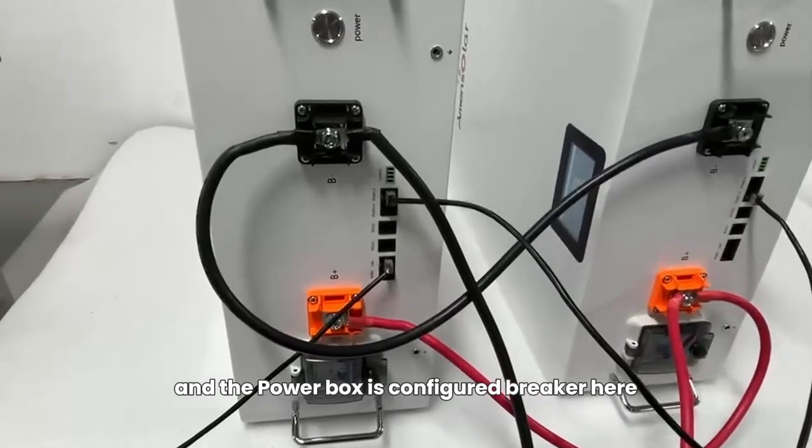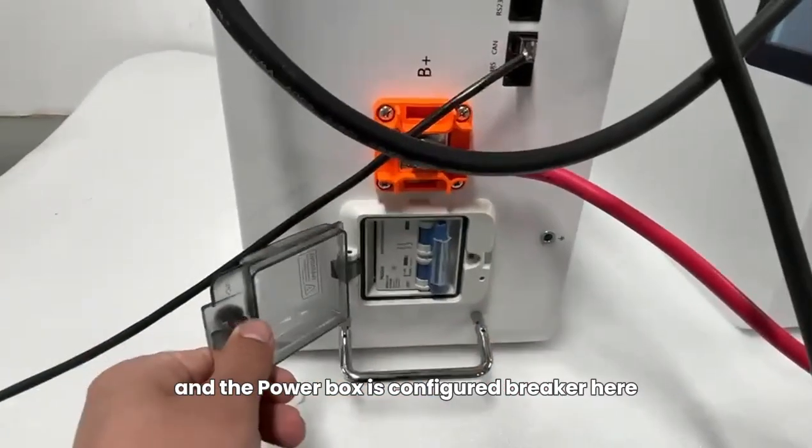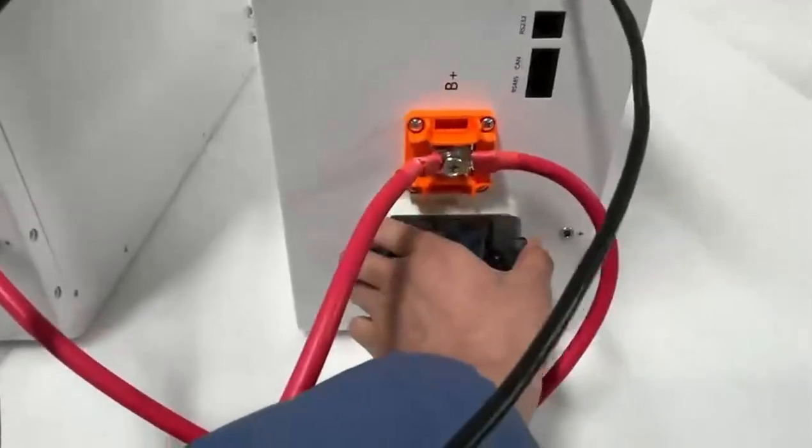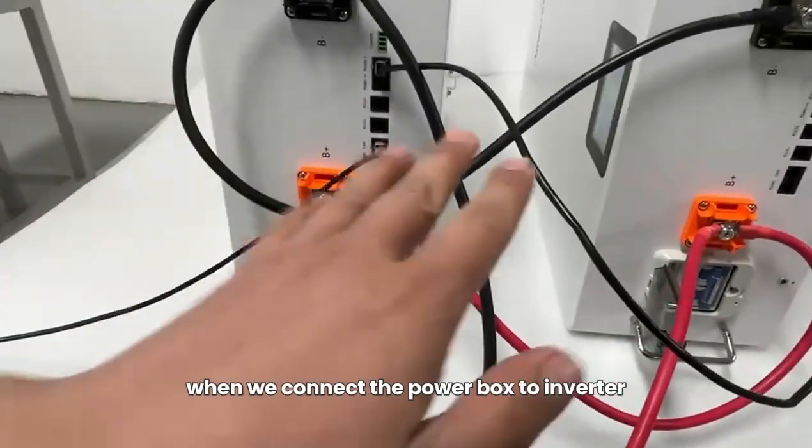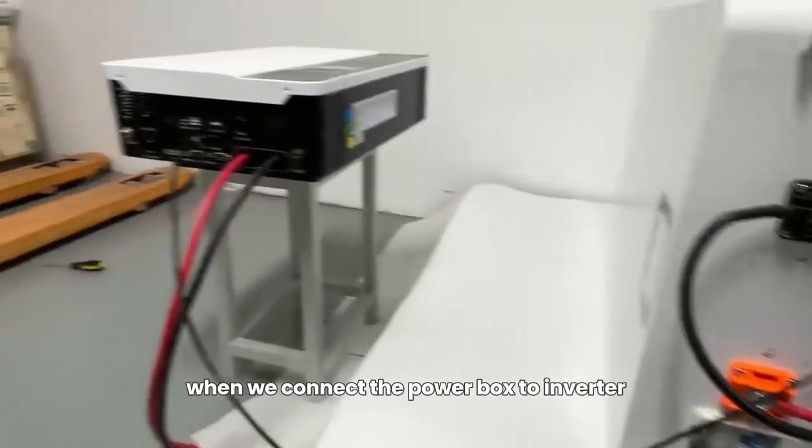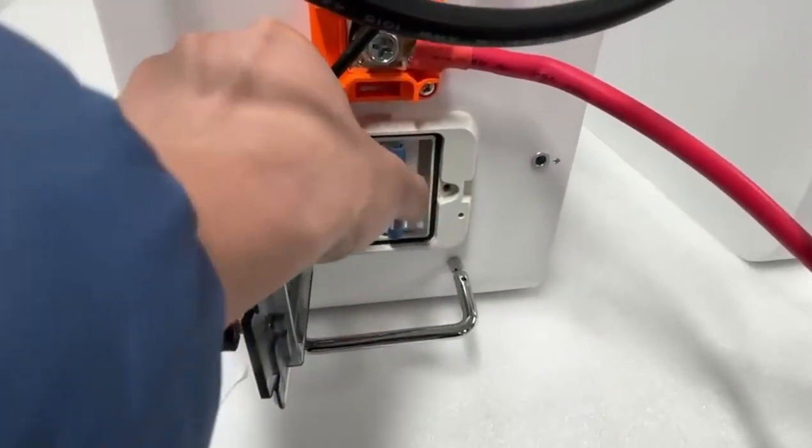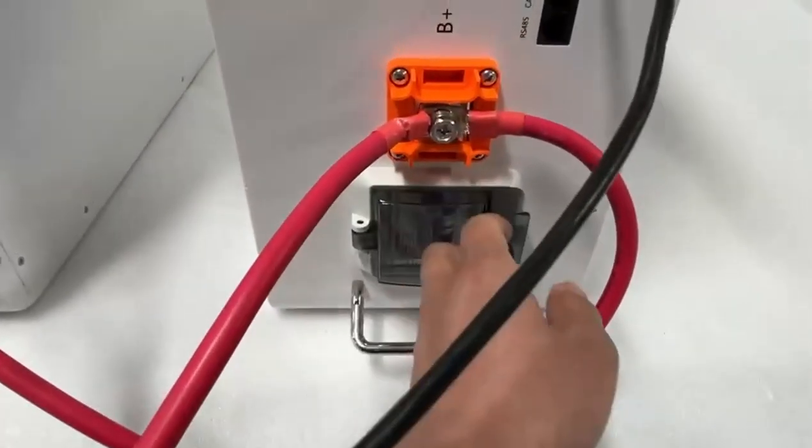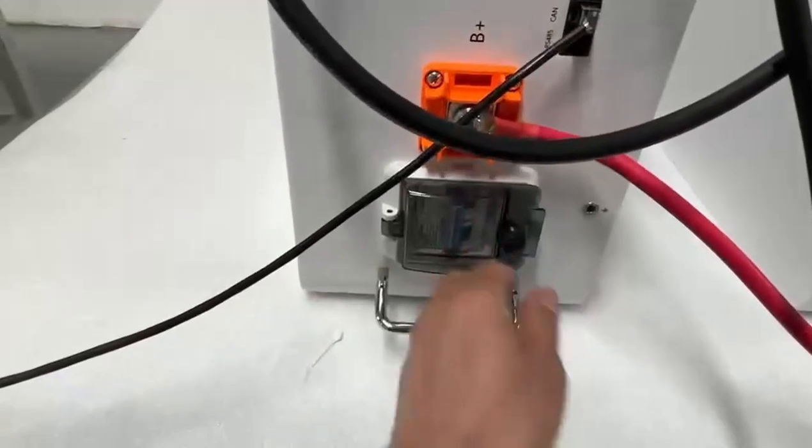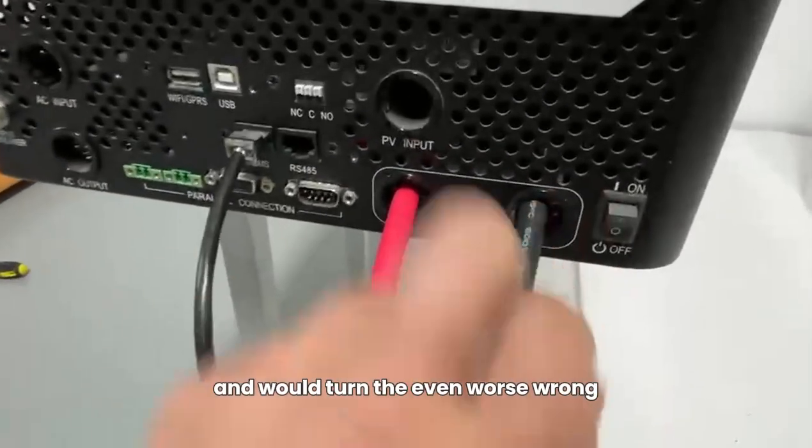And the power box is configured with a breaker here. When we connect the power box to inverter, we need to turn the breaker on. And we turn the inverter on.